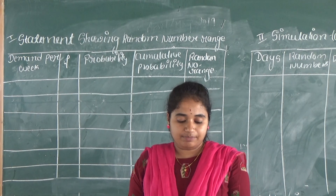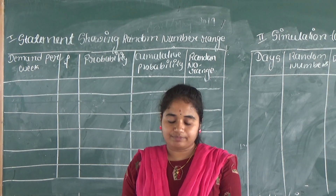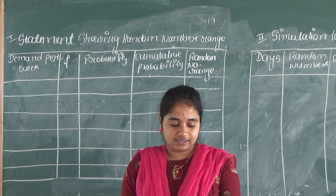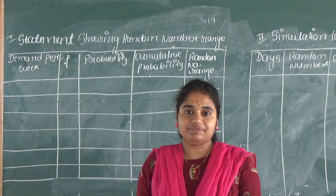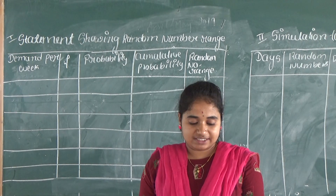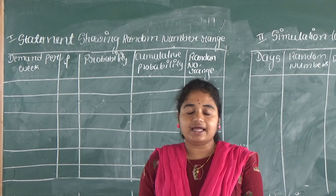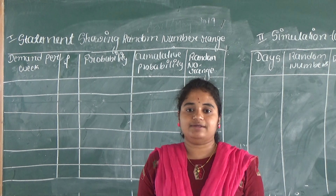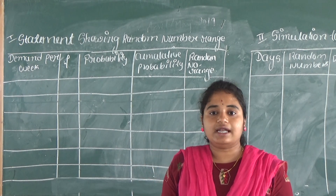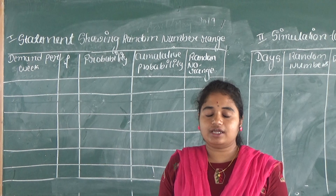The random numbers are 35, 52, 30, 90, 23, 73, 34, 57, 35, and 83. So here in the simulation problem, the random numbers are given.